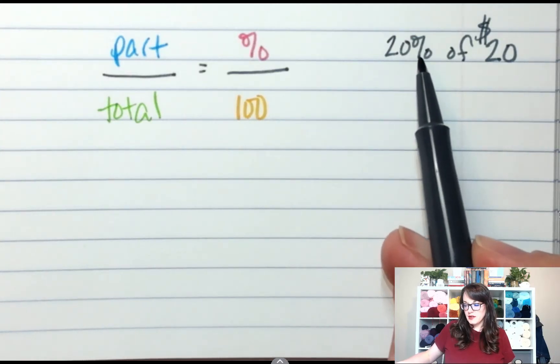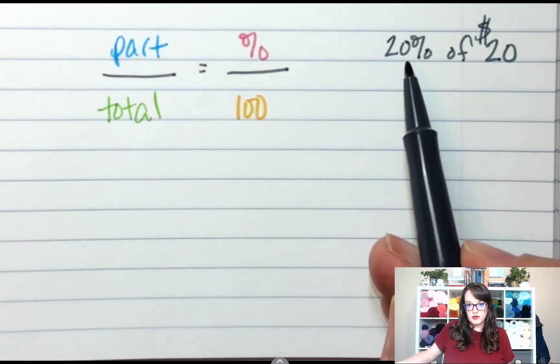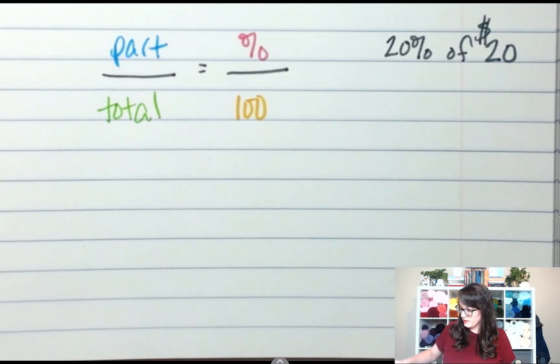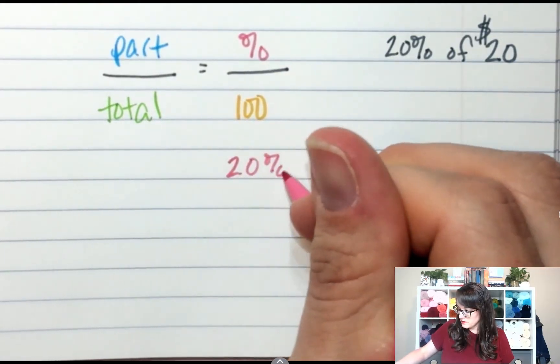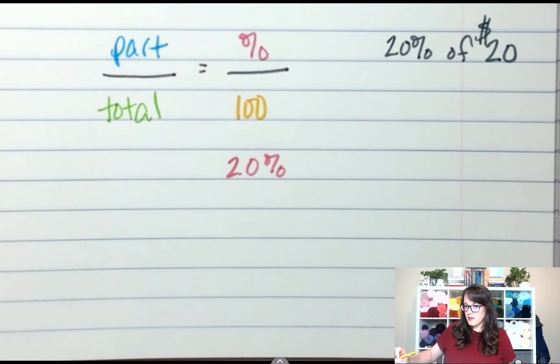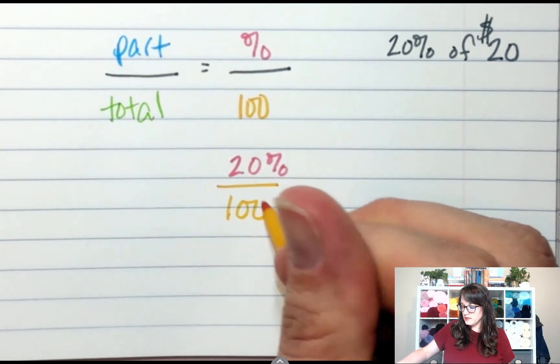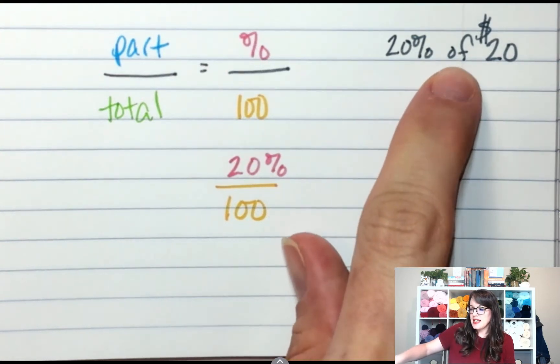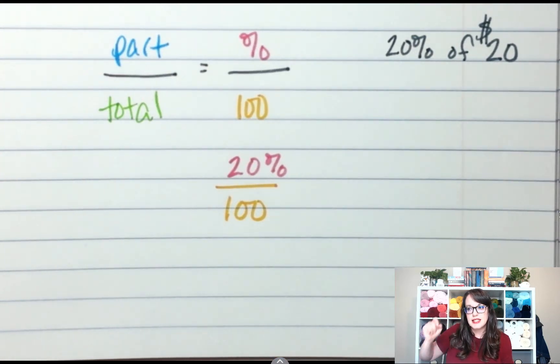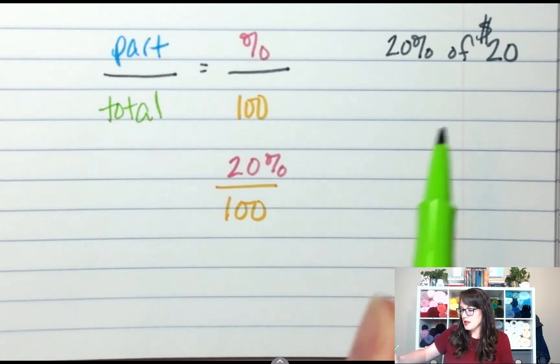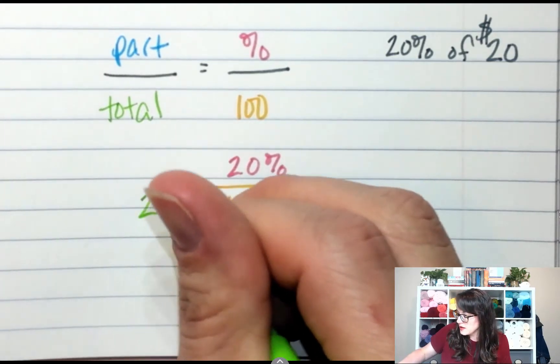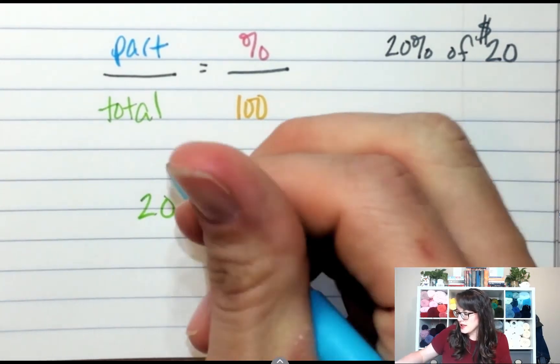The percent of the part goes where? Top right. So that's going to be 20% goes in the top right corner. What's always in the bottom right? Good. And now, do I know the total or do I know the part? Since this says of 20, that's telling me that this is the total price. Of 20. Remember we talked about is over of. So of 20. I don't know the part. That's my unknown, my X.